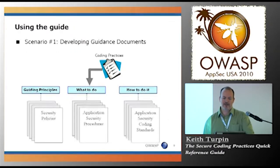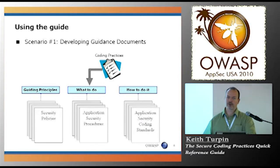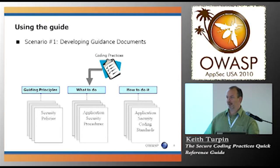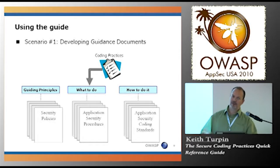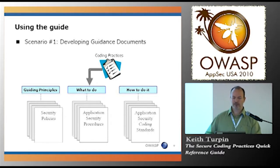So, developing guidance documents—these are some of the uses for the Secure Coding Practices Guide. If you take a look at your security documentation framework that supports secure software development, your company is typically going to have some high-level IT security policies. They're not necessarily going to get into secure software development. They're basically going to say we have some assets that should be protected—don't do bad things—with slightly more detail. Those are typically your high-level policies.